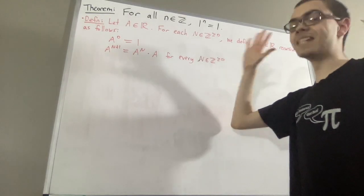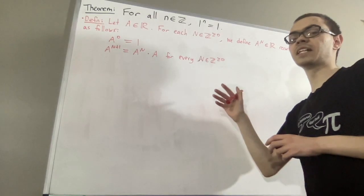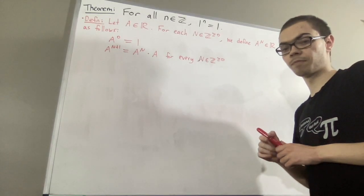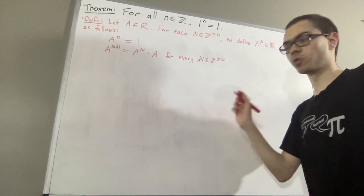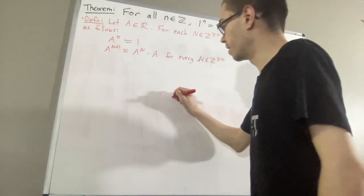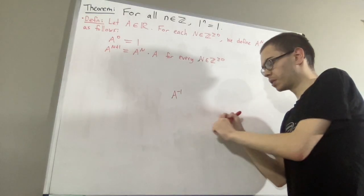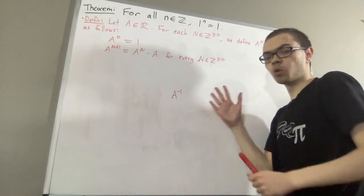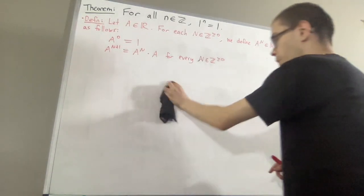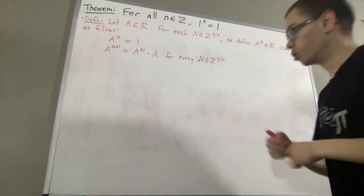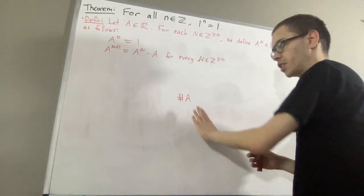Now, to talk about negative integer exponents, we are going to be using the concept of the reciprocal of a non-zero real number. A common notation used to refer to the reciprocal of a non-zero real number is with a superscript of negative 1. But since we're about to define negative integer exponents, we're essentially going to be defining this notation again. So, for now, let's temporarily use the notation hashtag a to refer to the reciprocal of a non-zero real number a.